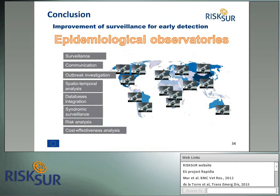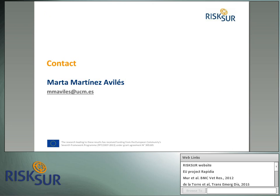To conclude, we have seen many tools and systems for improving surveys for early detection, which from a management perspective could be translated into epidemiological observatories dedicated to activities such as surveillance, communication, outbreak investigation, spatial-temporal analysis, database integration, syndromic surveillance, risk analysis, and cost-effectiveness analysis. These are implemented in some countries but still need to be much more widely adopted. I hope you have enjoyed this lecture and I am happy to take any queries on the email stated here. Goodbye!